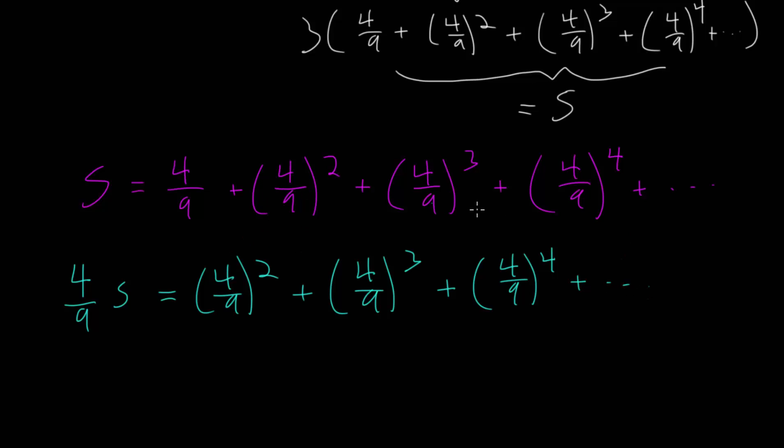It's essentially every term from the original one minus the first term. To figure out this sum, what we can do next is take the original sum and subtract this new sum multiplied by that common ratio, 4 ninths s.